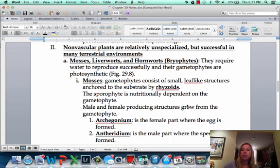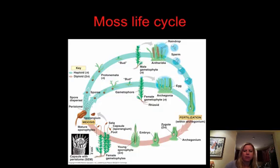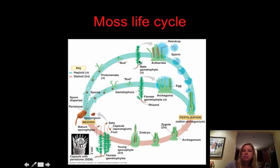One thing about these guys is they require water to reproduce. There's going to be the female part called the archegonium, and then there's the male part called the antheridium. The female part makes the egg, and the male part makes the sperm. The sperm actually needs rainwater to get over to the egg. In this life cycle picture, you can see this is an archegonium with the egg in it, and this is an antheridia with the sperm in it. These are at the tips of the gametophytes, and rainwater is going to bring the sperm to that egg and fertilize it.